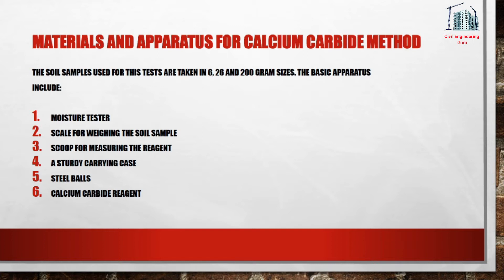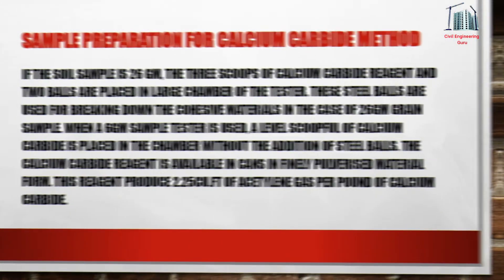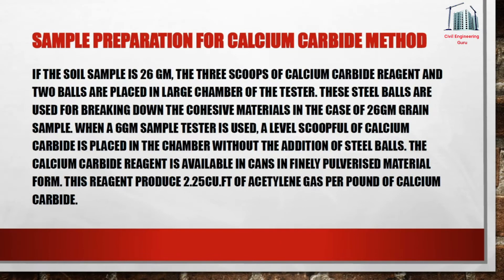The soil samples used for this test are taken in 6, 26, and 200 gram sizes. The basic apparatus includes a moisture tester, scale for weighing the soil sample, scoop for measuring the reagent, a sturdy carrying case, steel balls, and calcium carbide reagent. For a 26 gram sample, three scoops of calcium carbide reagent and two steel balls are placed in the large chamber of the tester.